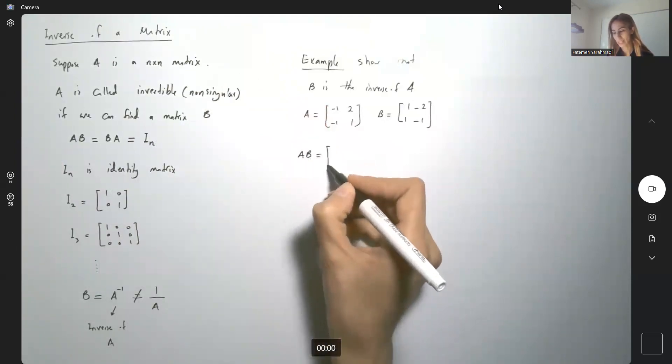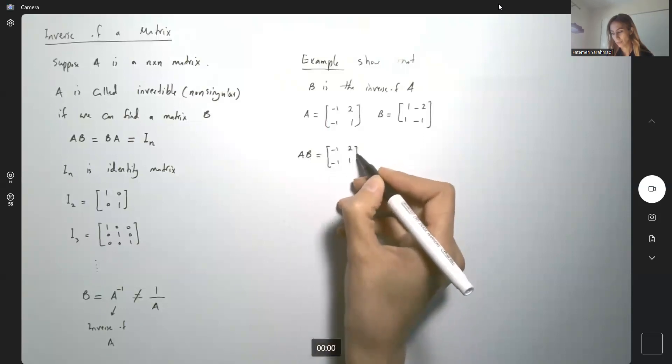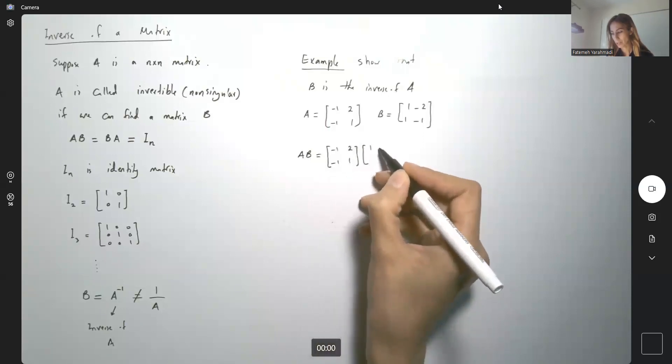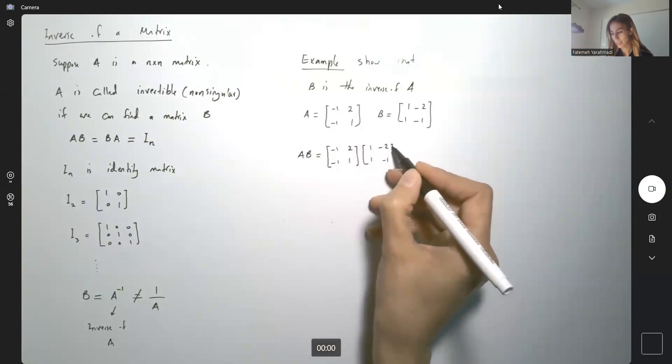What is the product between A and B? A is negative 1, 2, negative 1 and 1. B is 1, negative 2, 1 and negative 1.